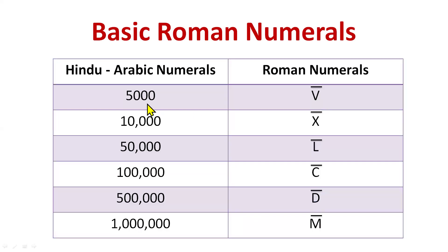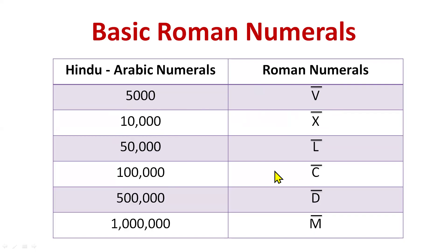Now for larger numbers: 5000 — you remember 5 was V, so 5000 is V with a bar. 10,000 is X with a bar. 50,000 is L with a bar. 100,000 is C with a bar. 500,000 is D with a bar, and 1,000,000 is M with a bar. That horizontal line above the symbol multiplies the value by 1000.